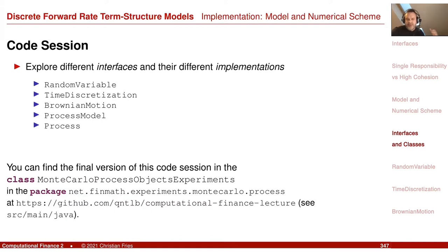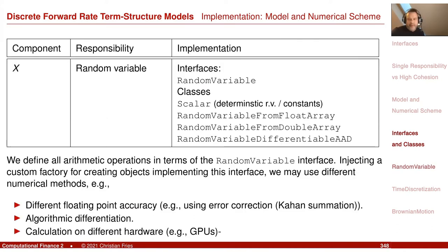Let's do a small code session where we start looking at some of these interfaces and implementations. You can also find this in the repository to look at later. The first interface I'd like to review — it's already in the library — is the random variable.